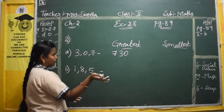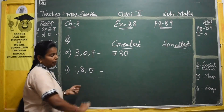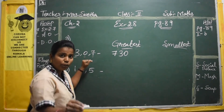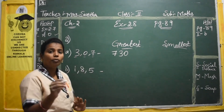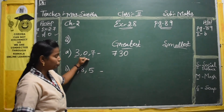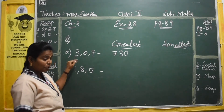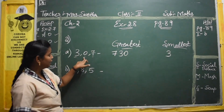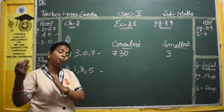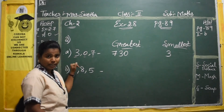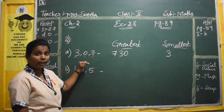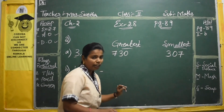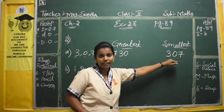For the smallest number using 3, 0, 7: note that 0 is not a valid first digit — 0 will not have any value in the first place, so you should not take 0 first. Other than 0, the smallest digit is 3. Then from 0 and 7, the smallest is 0. The leftover is 7. So the smallest number formed is 307.